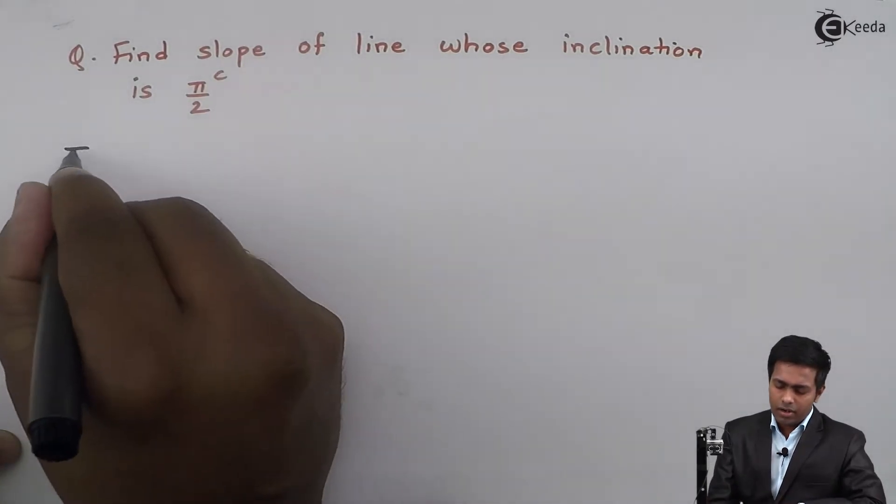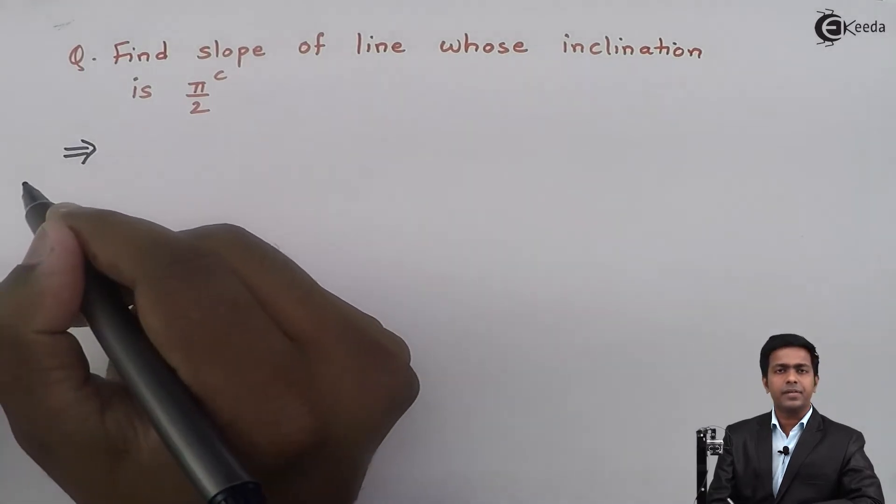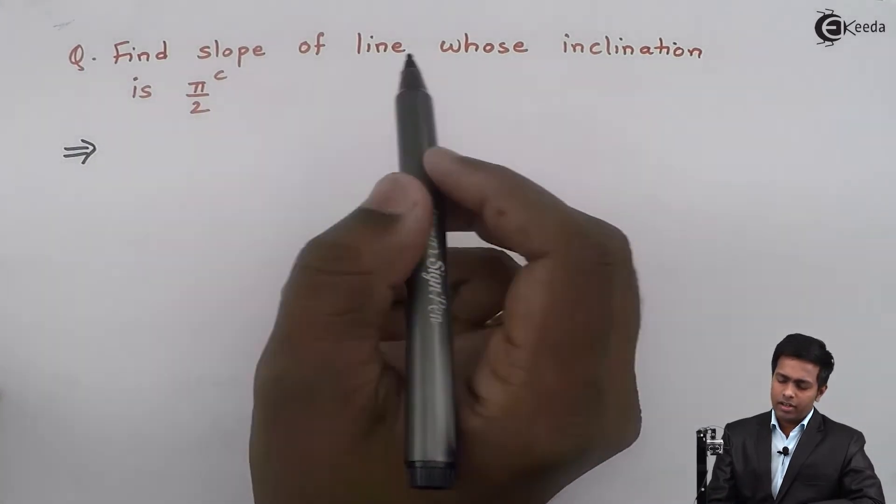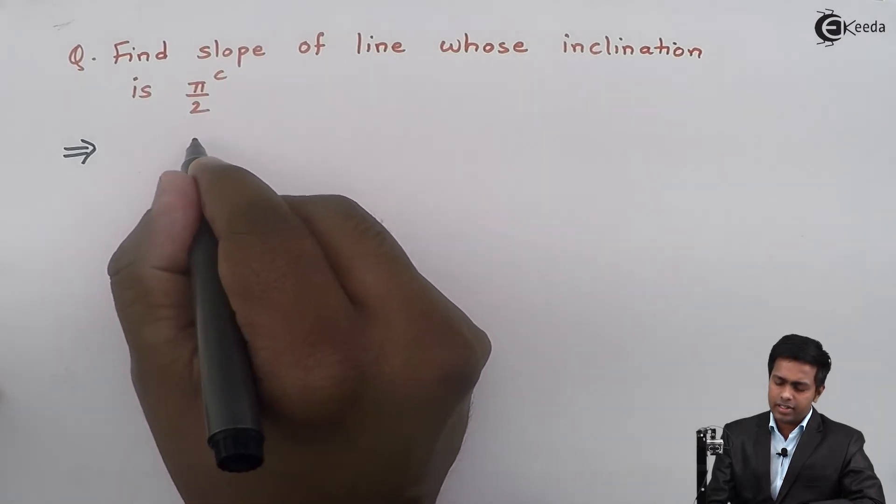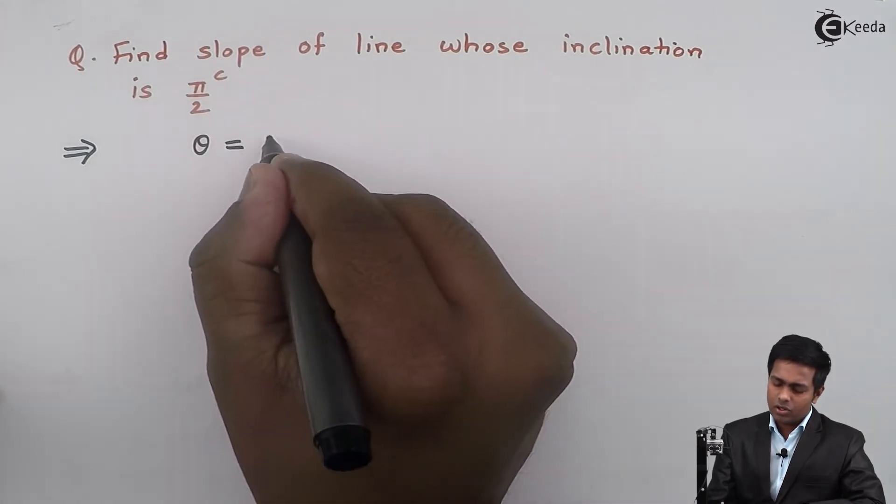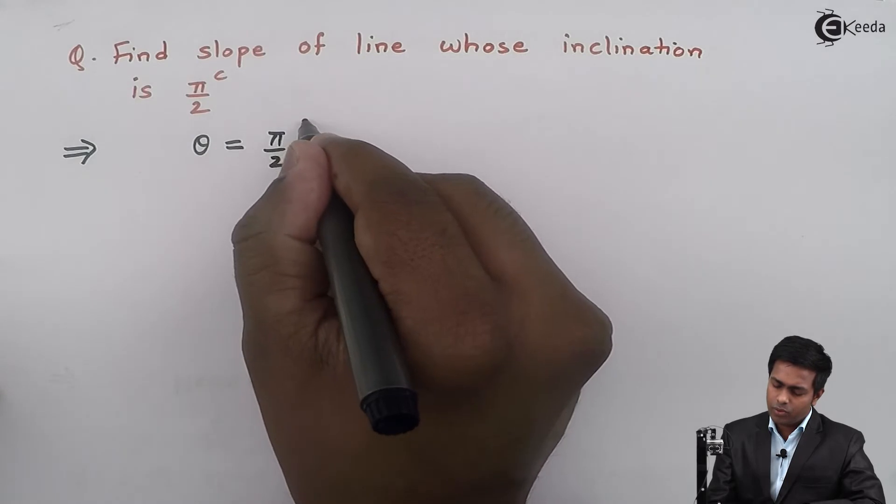First, let's understand the given data. The inclination is π/2. I will consider this as theta, so θ = π/2 radians.